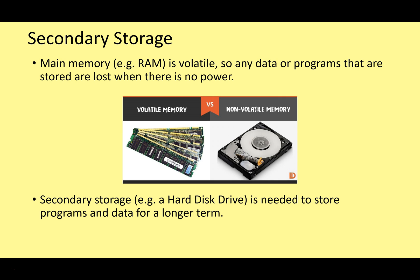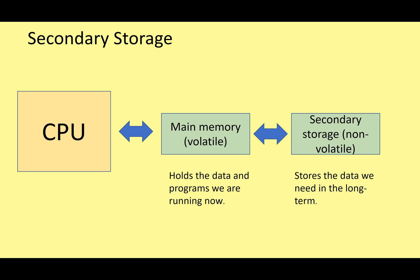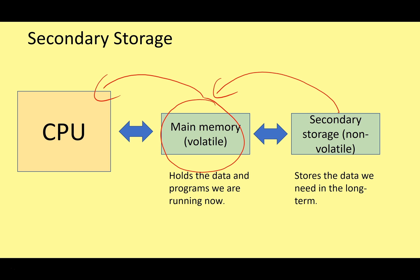We use RAM just to contain all the program instructions we're using right now on the computer, and we use the non-volatile secondary storage to contain the data and programs we want to use long term. Looking at this diagram, we have main memory in the middle. When we start a program or use data, it goes from secondary storage to main memory, and then from main memory to the CPU. When we're finished calculating things, we move it back from main memory into secondary storage so it can be kept for next time.